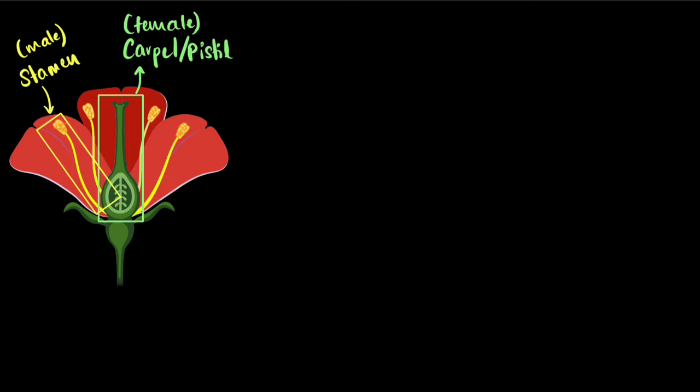Anyways if we further look at the male parts, the male part stamen has actually two sub parts. You have the long filament and then on top of the filament contains the anther and you can see small dots that are put over there. That's the pollen grains that contains the male gamete, the sperm cells.